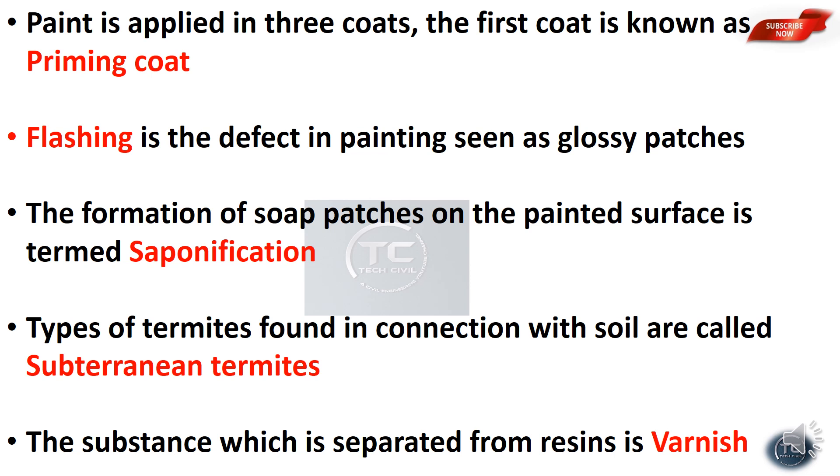The substance which consists of resin dissolved in a solvent is called varnish. The main constituent of varnish is resin.